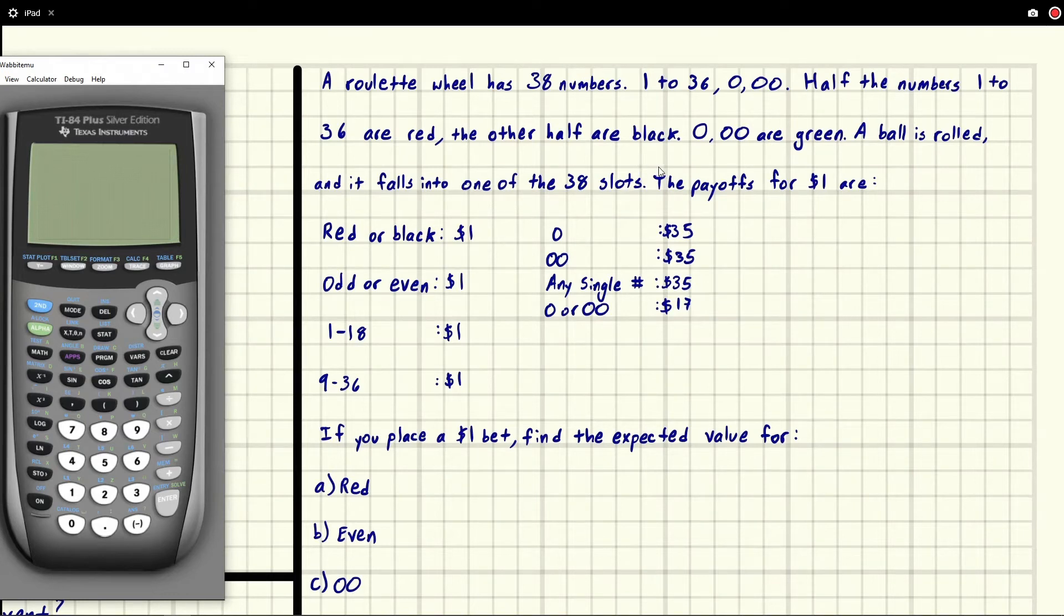Eric Burgess here. A roulette wheel has 38 numbers: 1 to 36, 0, and double 0. Half the numbers 1 to 36 are red, the other half are black. 0 and double 0 are green. A ball is rolled and it falls into one of the 38 slots.